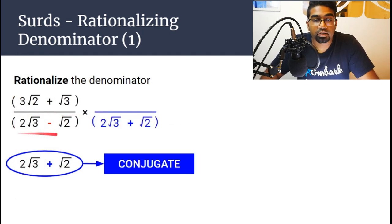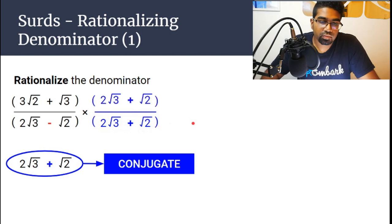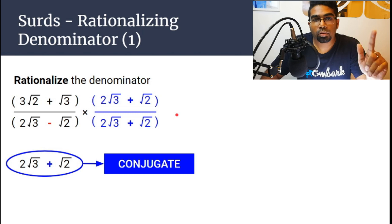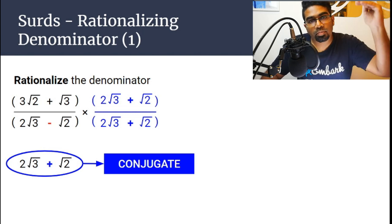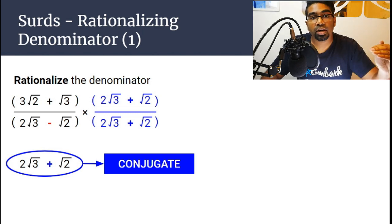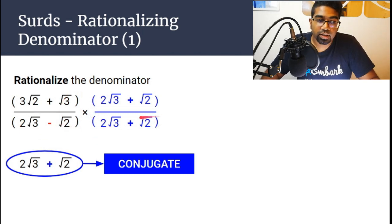In order to rationalize the denominator, we need to multiply it by the conjugate. But we cannot change the value of the expression, so if we multiply the denominator by the conjugate, we must do the same for the numerator. For example, 1/2 is the same as 2/4 or 5/10 — the value doesn't change as long as we multiply both numerator and denominator by the same number. So we multiply both the numerator and denominator by the conjugate.